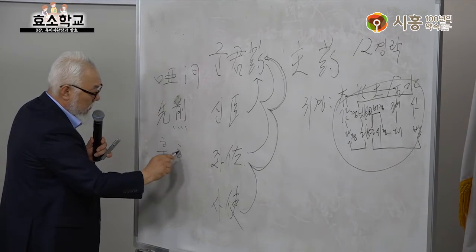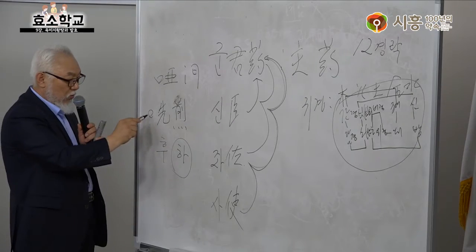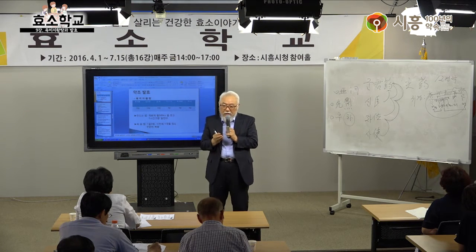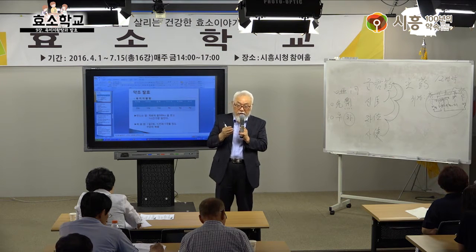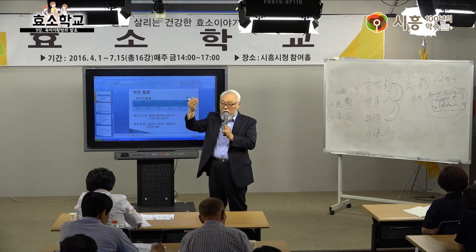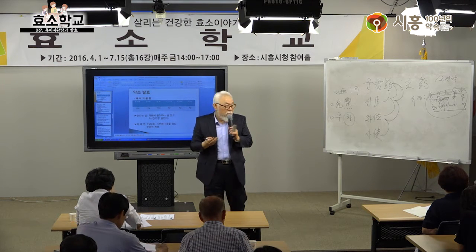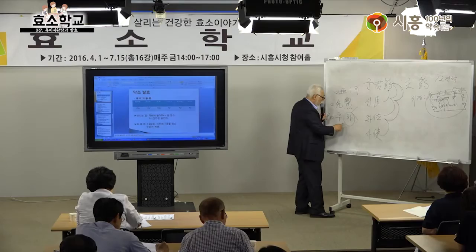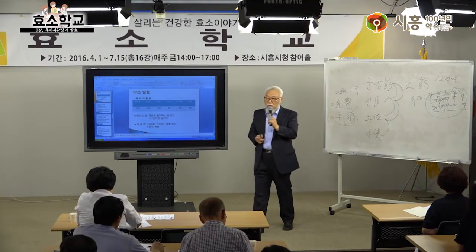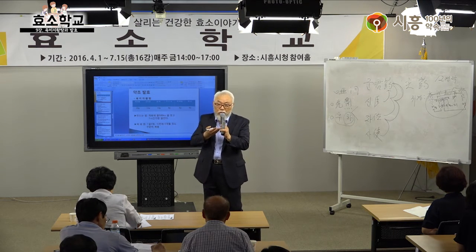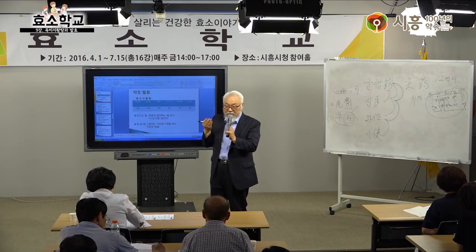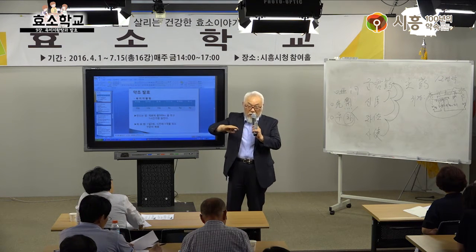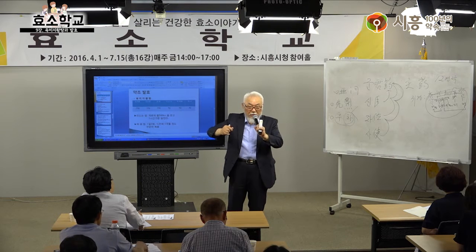육미지황탕 주약인 숙지황은 신장 기능을 좋게 합니다. 혈액과 정액의 생성을 촉진하는 강심작용도 합니다. 산약은 아밀라제 소화효소를 함유하여 소화 흡수를 돕고 보비 작용, 보기 작용, 정액 누설 방지하는 고정 작용, 소변 농축 작용, 보신 작용을 합니다.